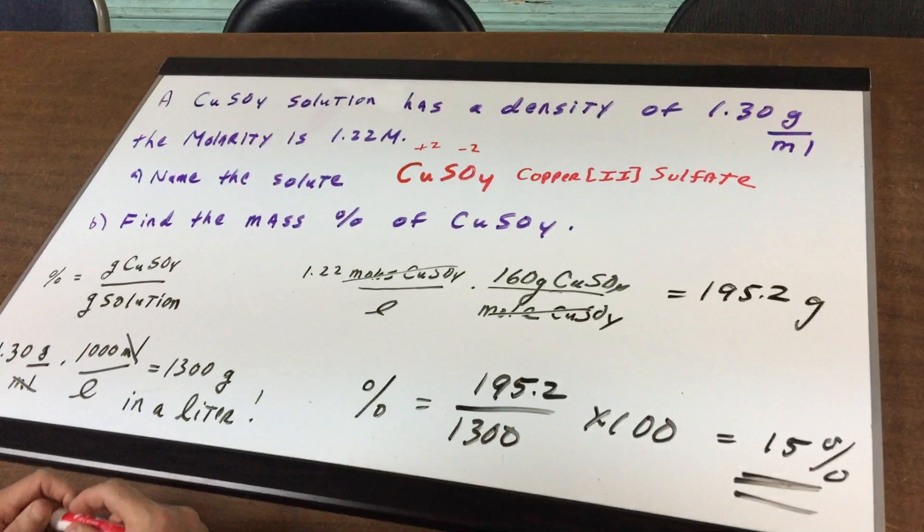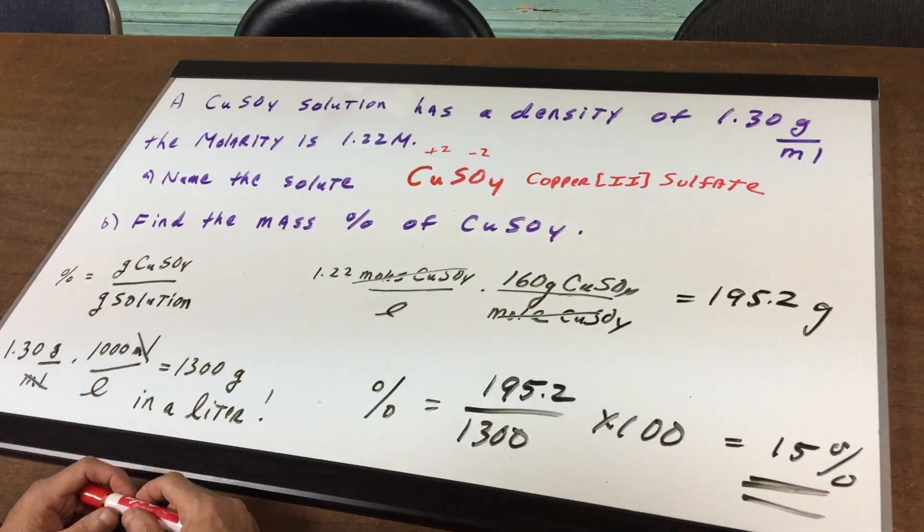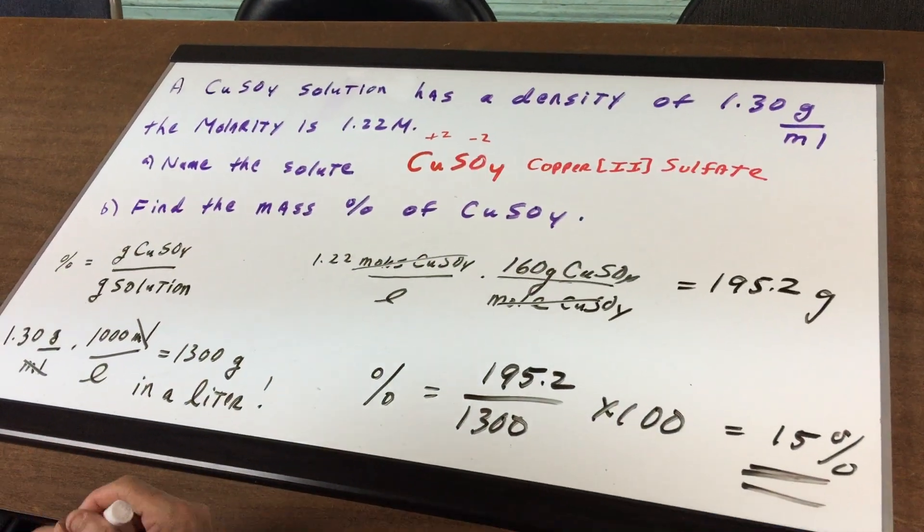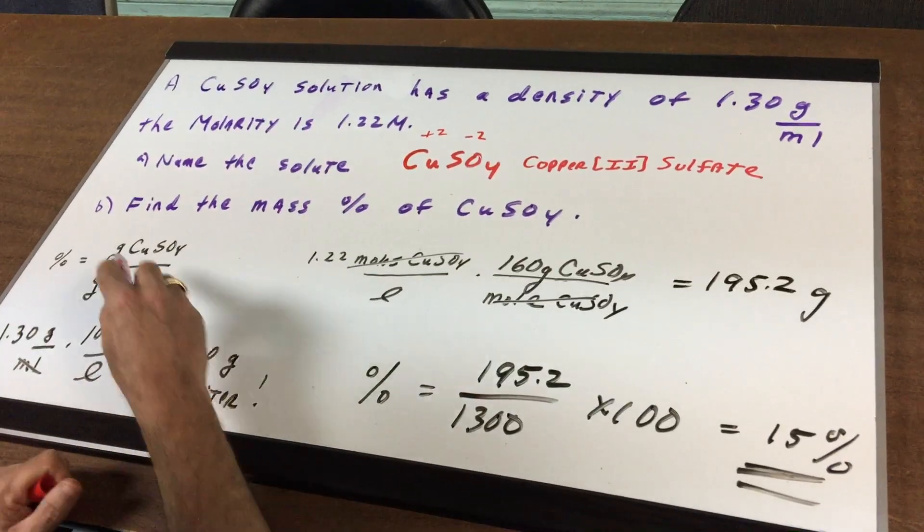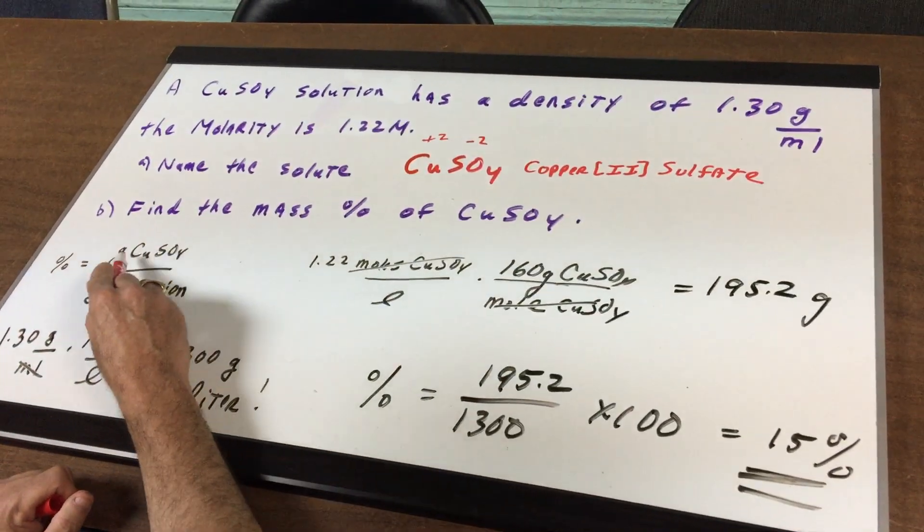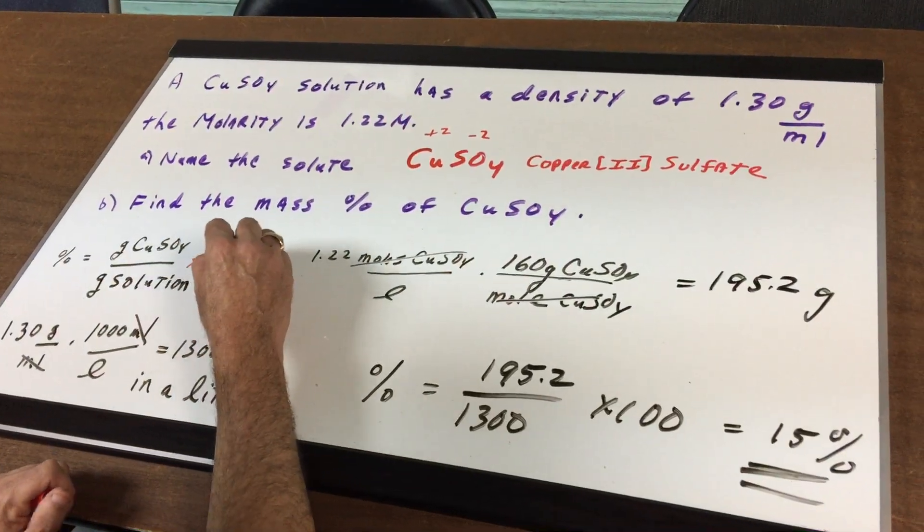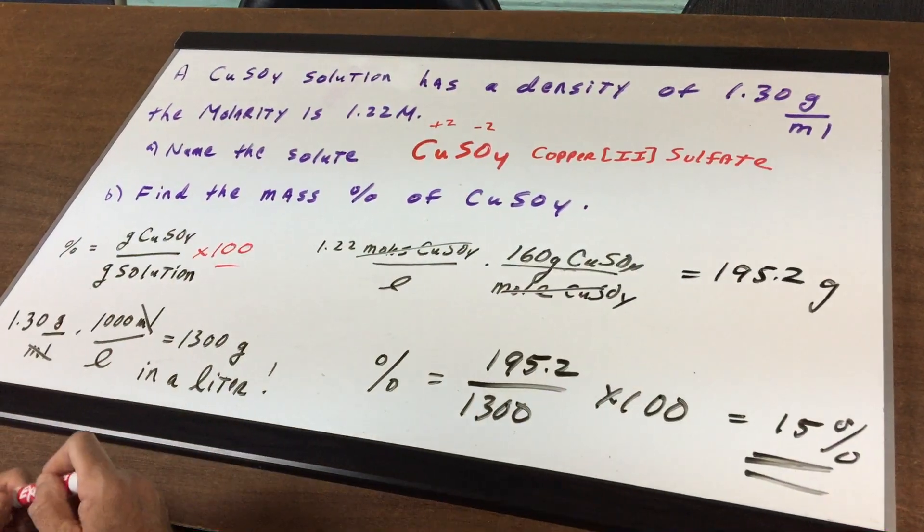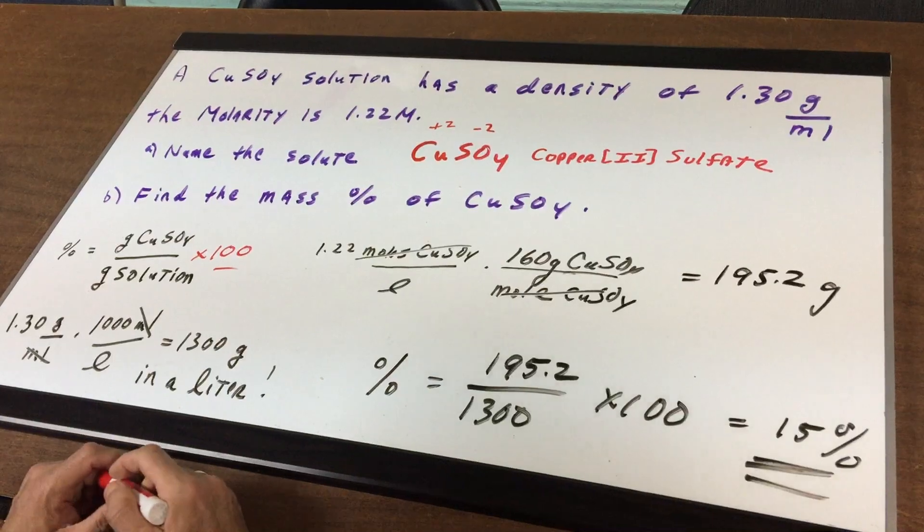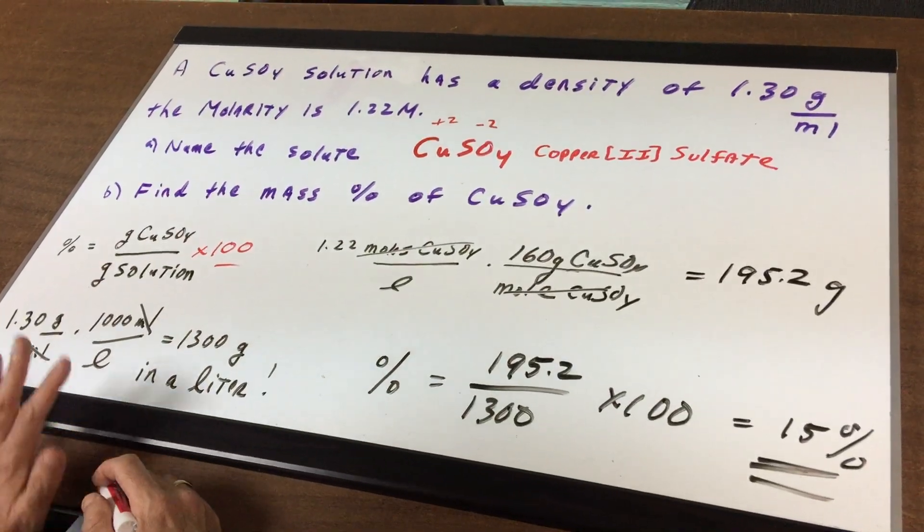Part B: I want to find the mass percent of copper two sulfate. Now the mass percent is going to be the grams of this copper two sulfate over the grams of solution times 100. Now I'm going to show you a great little trick to get grams of solution.